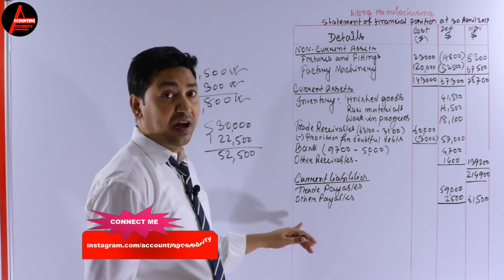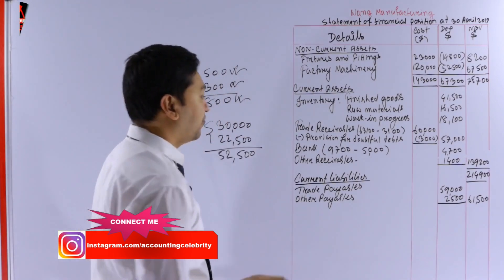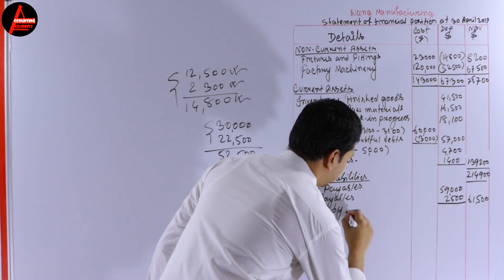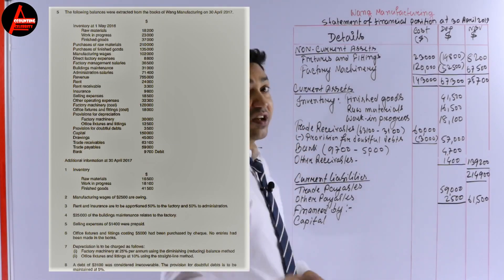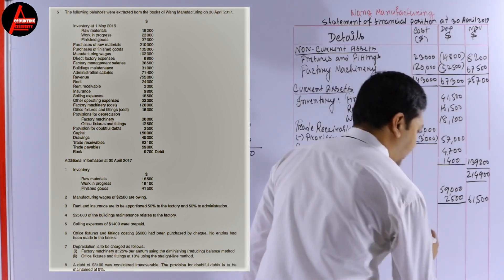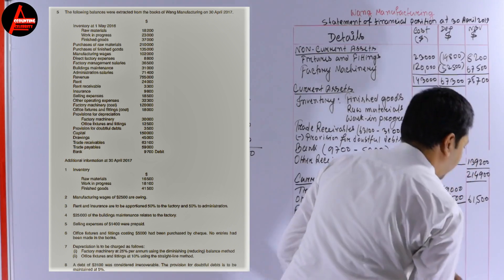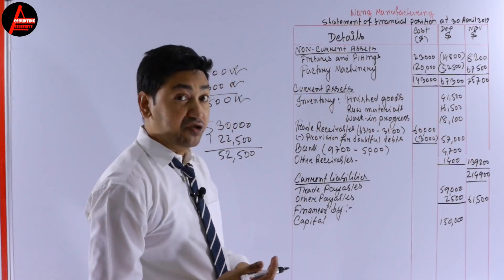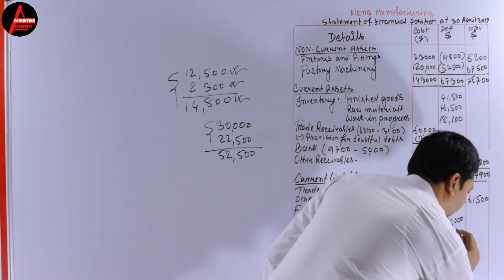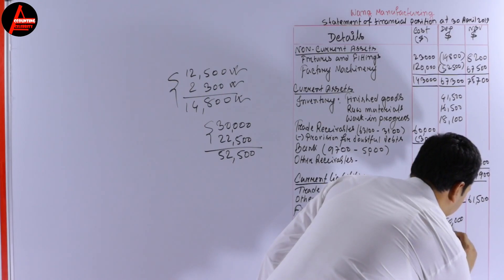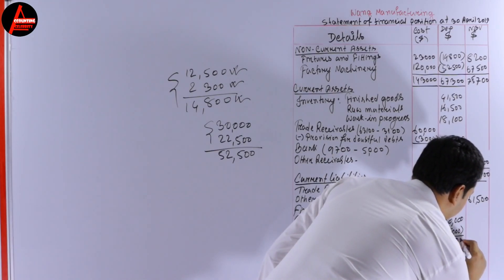We have no non-current liabilities in this question, so we skip that section. The last section is 'Financed By.' Here we write capital, which from the question is $150,000. Then we subtract drawings. Drawings are $45,000, so subtracting gives $105,000.